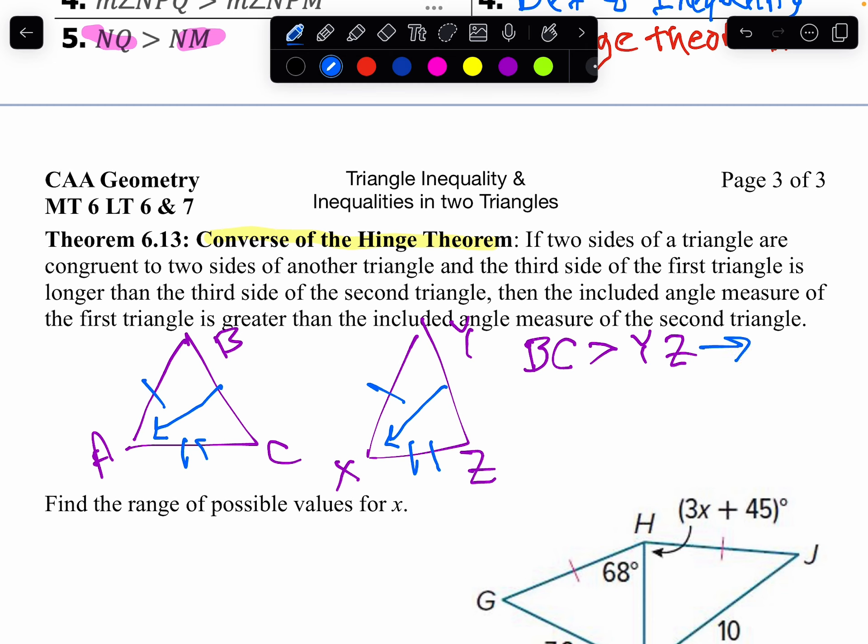So that tells me the measure of angle A is going to be greater than the measure of angle X. So the converse is when you're comparing angles, the hinge theorem is you're comparing sides.